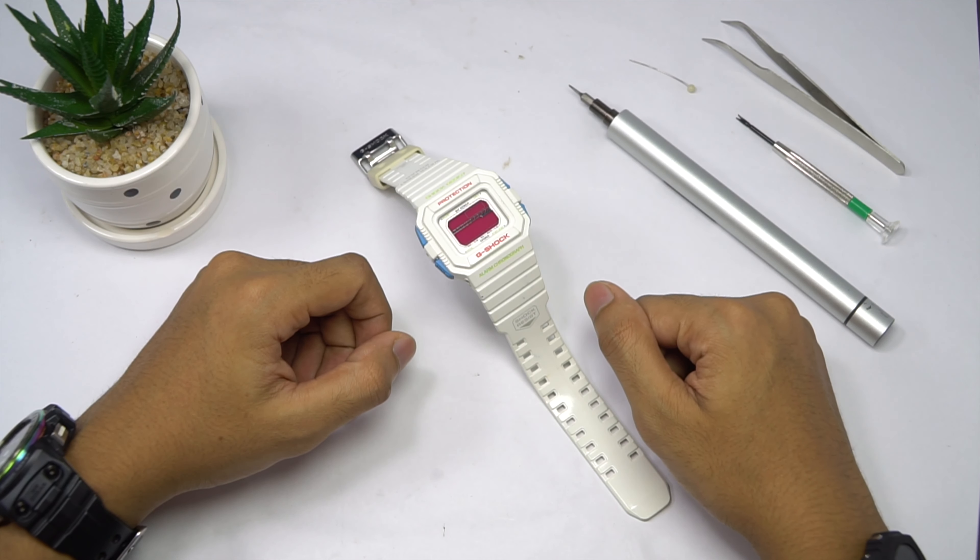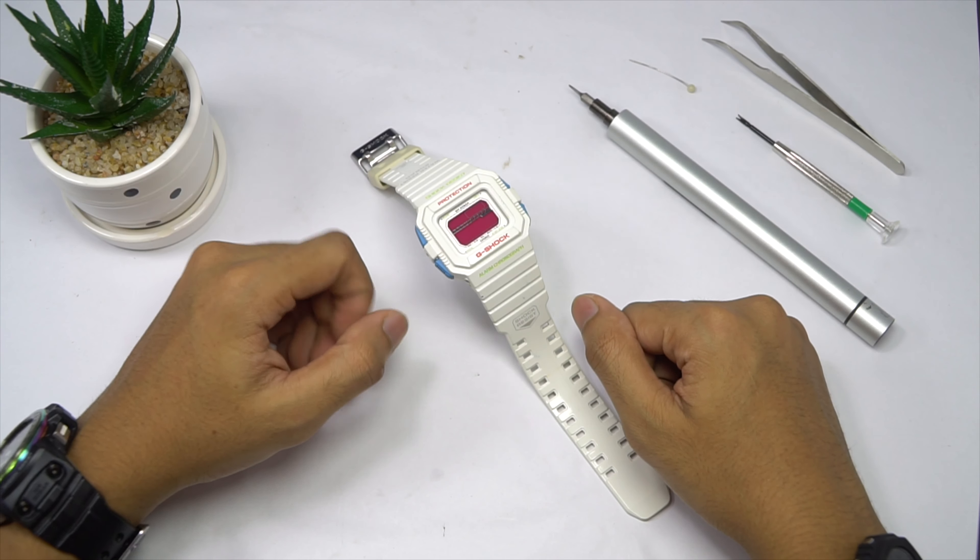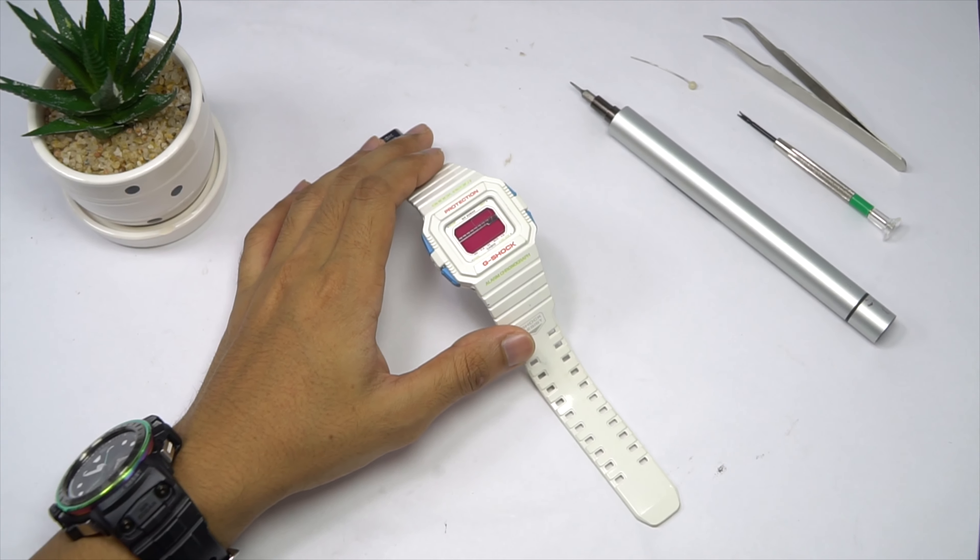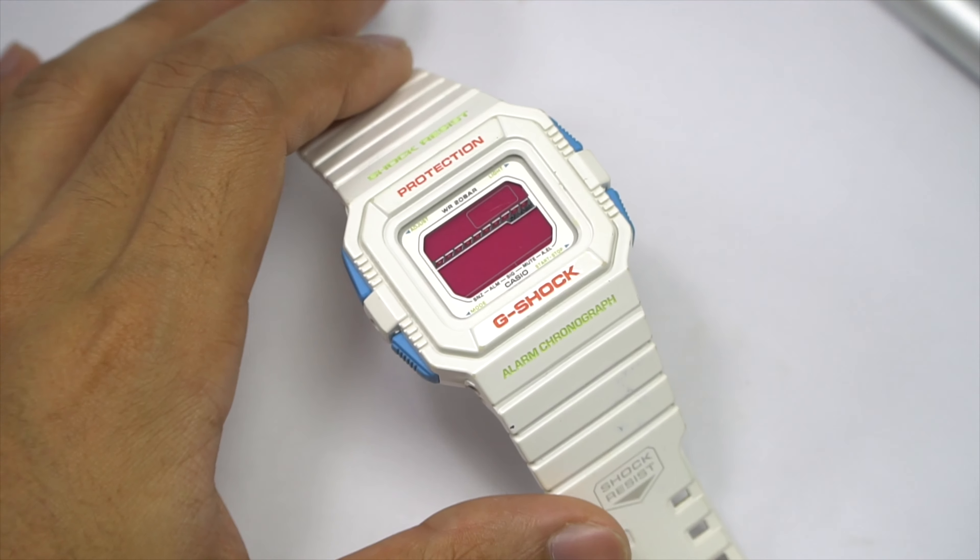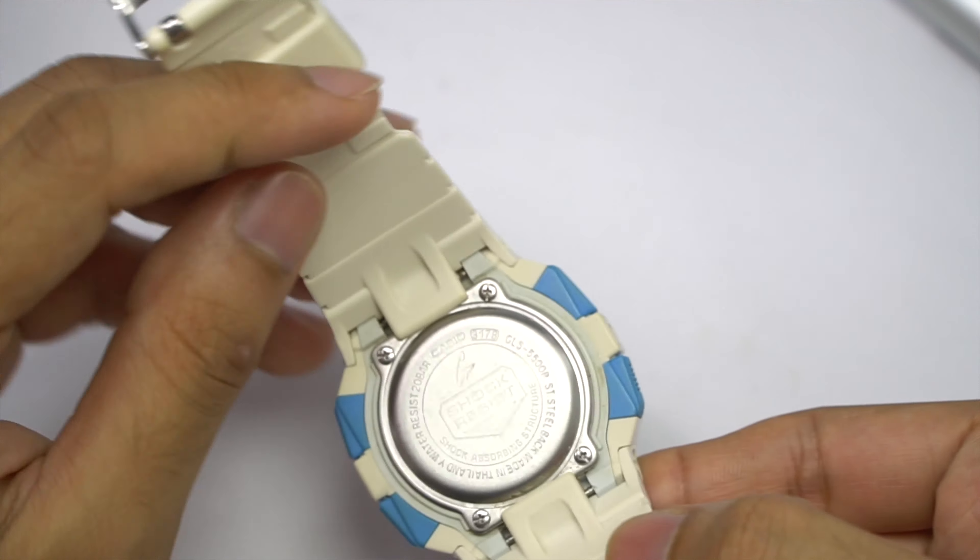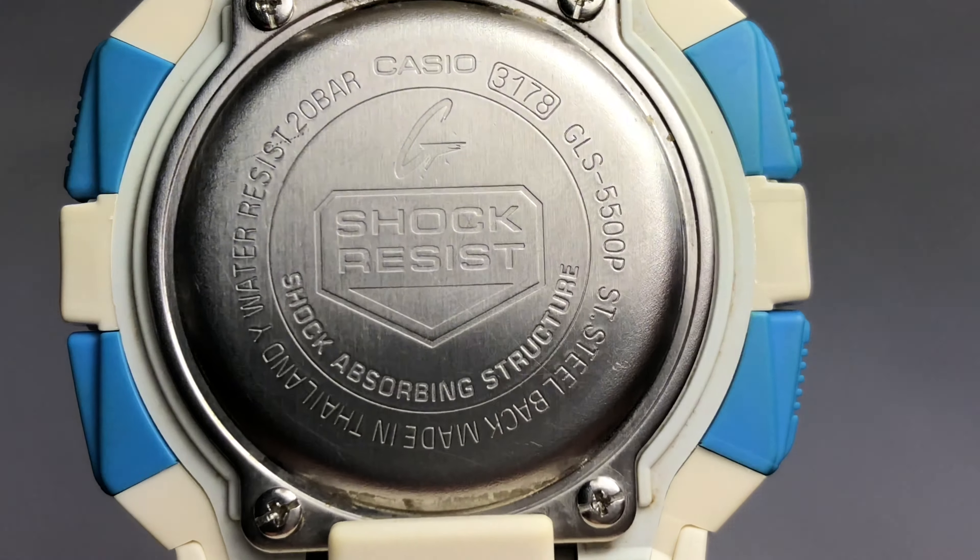Hello everyone, Jackshaft here. Today I would like to disassemble a GLS-5500, a G-Lite series G-Shock watch in square shape, because the battery has already run out.